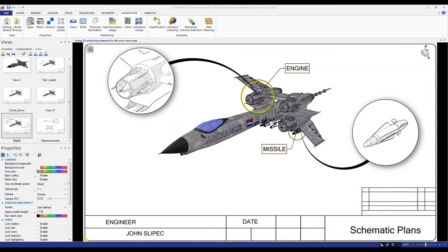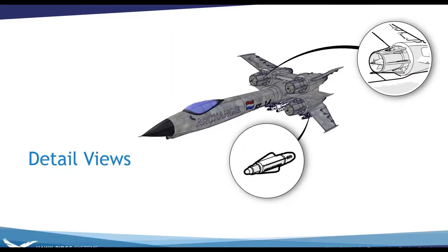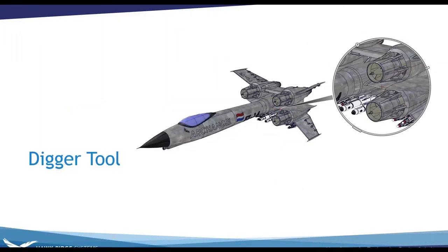After clearing the Technical Illustration Workshop, double-click the camera view to return to position, then take the detail view images and place them wherever you need. In the detail view preview you can see the lines are much thicker on the outside — play around with those to get the desired effect. Next up is the digger tool.